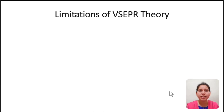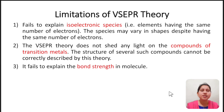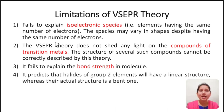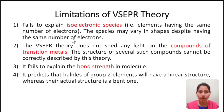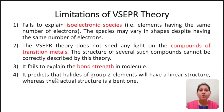Now let us see some of the limitations of VSEPR theory. Though VSEPR theory succeeded in explaining the structures of many molecules, it fails to explain isoelectronic species — species having the same number of electrons may vary in shape despite this. The VSEPR theory does not shed any light on compounds of transition metals, and the structure of several such compounds cannot be correctly described by this theory. It also fails to explain bond strength in molecules, and it predicts that halides of Group 2 elements will have a linear structure, whereas their actual structure is bent.